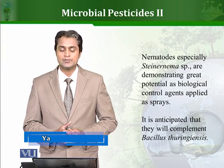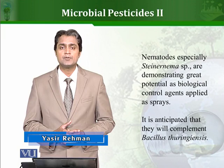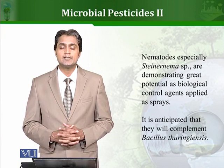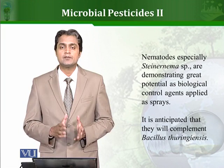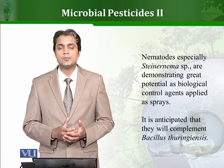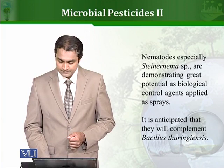There are also other bacteria and other microbes which can serve this purpose as well. All these microbial pesticides can be combined together and can complement each other, because one type of microbial pesticide is active against only a certain range of insects and pests. If we can complement this with some other microbial pesticide, we can achieve much more efficient results.